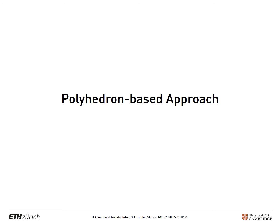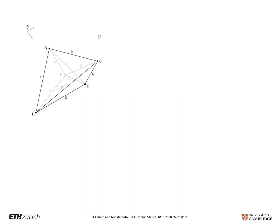So when it comes to the polyhedron-based approach, we have a structure, a spatial truss, like the one here, which is essentially a self-stressed tetrahedron. And for each one of the nodes, we have some concurrent edges coming in.